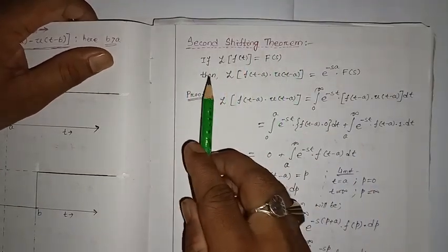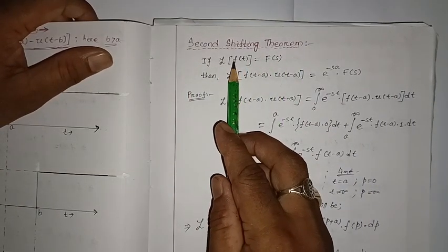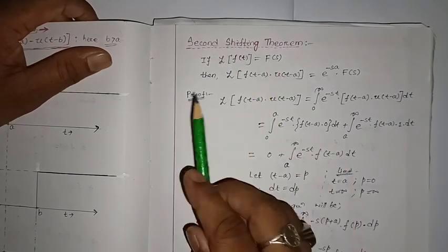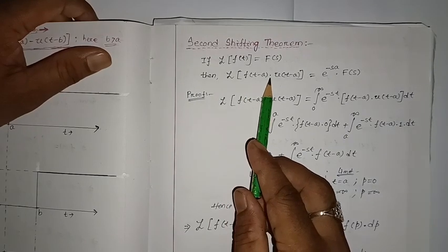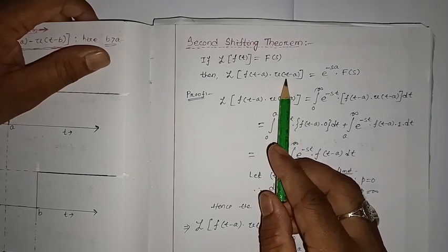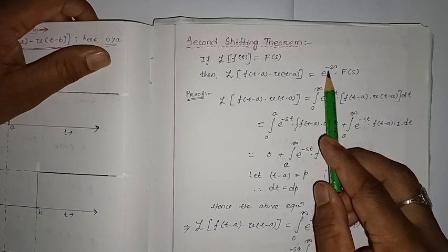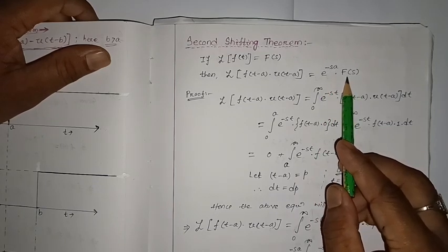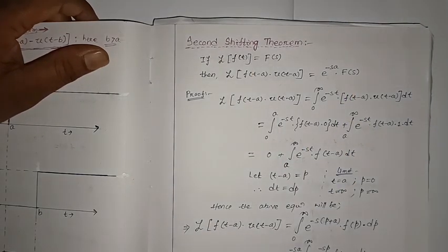According to this theorem, if the Laplace transform of f(t) equals capital F(s), then the Laplace transform of f(t minus a) into u(t minus a) — where u(t minus a) is the unit step function — is equal to e to the power minus sa into capital F(s).